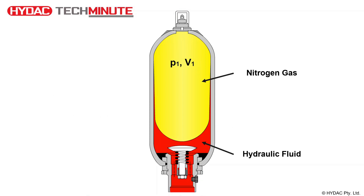P1 is the minimum system operating pressure and V1 is the corresponding nitrogen volume at that pressure. It is important to note that the hydraulic system pressure and the nitrogen gas pressure are always in equilibrium.